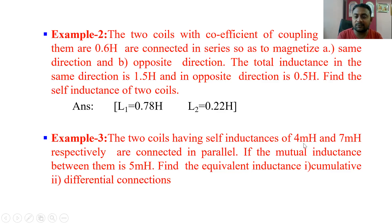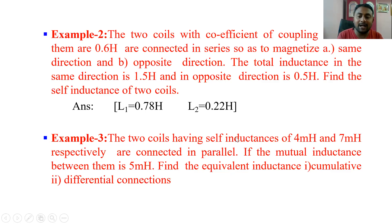The third problem: two coils have self inductance of 4 milli Henry and 7 milli Henry, so we have L1 and L2 values, connected in parallel. The mutual inductance between them is 5 milli Henry (M = 5 mH). Find the equivalent inductance in cumulative and differential connections. For cumulative: L = (L1·L2 − M²) / (L1 + L2 − 2M). For differential: L = (L1·L2 − M²) / (L1 + L2 + 2M). Since we know all values of L1, L2, and M, we can substitute and get the answers easily. Hope you understood — thank you.